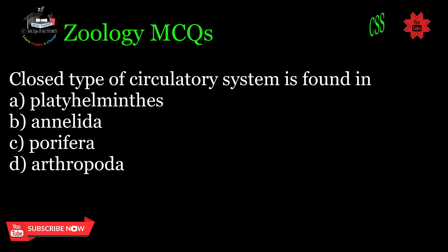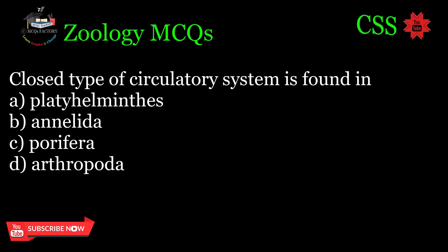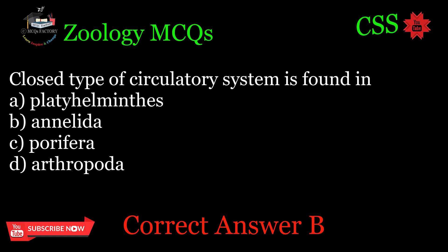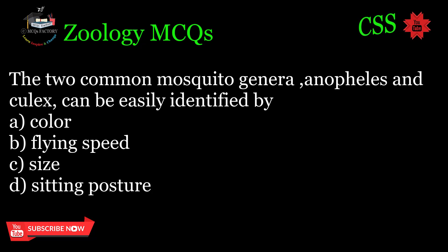Closed type of circulatory system is found in: A. Platyhelminthes, B. Annelida, C. Porifera, D. Arthropoda. Correct answer: B.